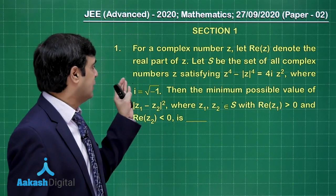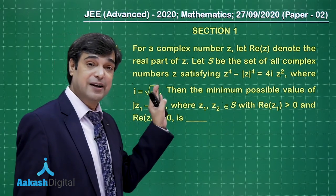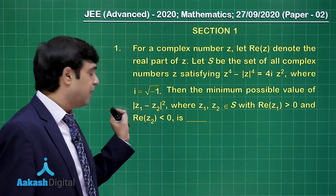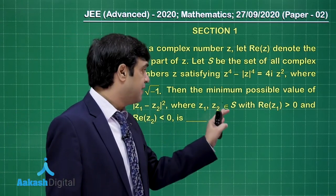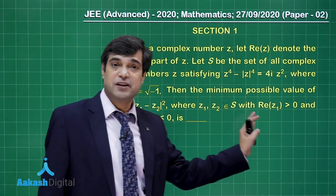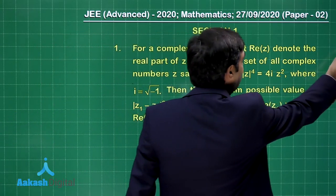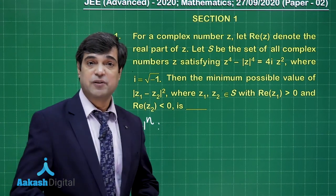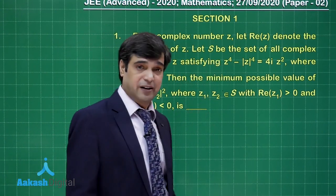For a complex number z, let Re(z) denote the real part. Let S be the set of all complex numbers z satisfying the given equation, where ι = √(-1). We need to find the minimum possible value of |z₁ - z₂|² where z₁ and z₂ are from set S, with Re(z₁) positive and Re(z₂) negative. Simple algebra is required to simplify the given equation to get the constraint.